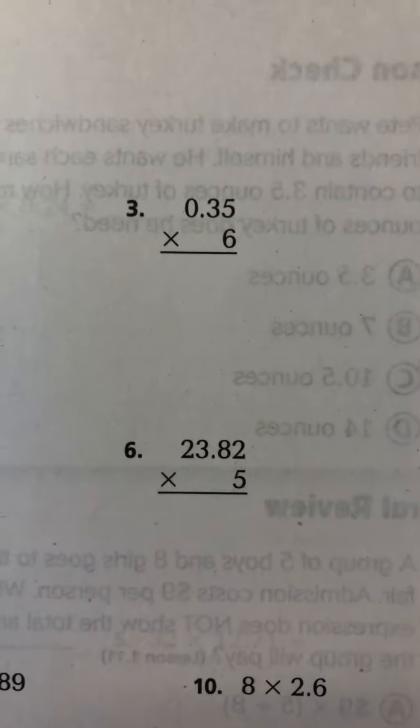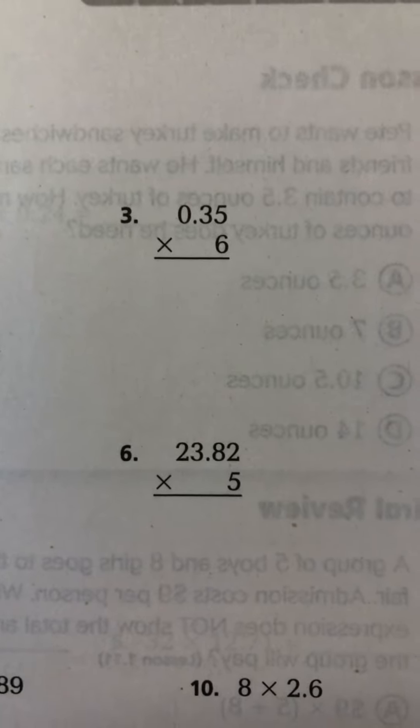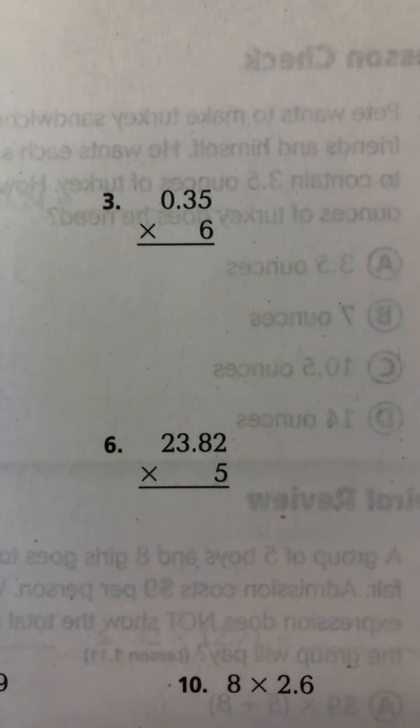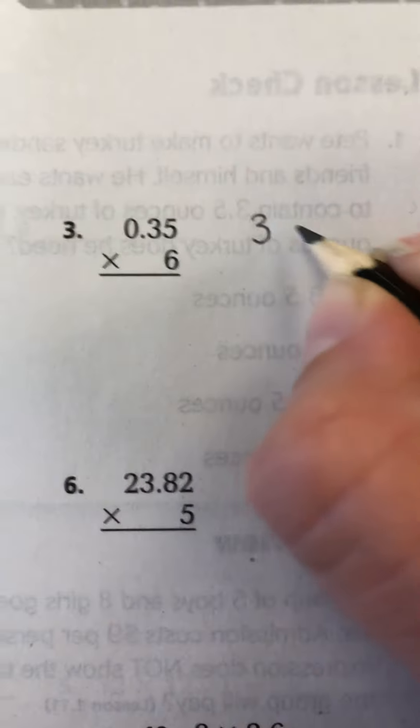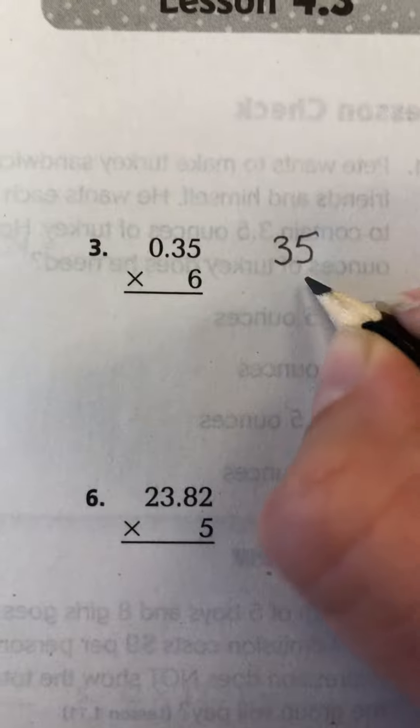Let's try another. This is 0.35 times 6, but we're going to treat it as 35 times 6. So because I'm treating it like 35 times 6, I'm going to go ahead over here and I'm actually going to rewrite it as 35 times 6.